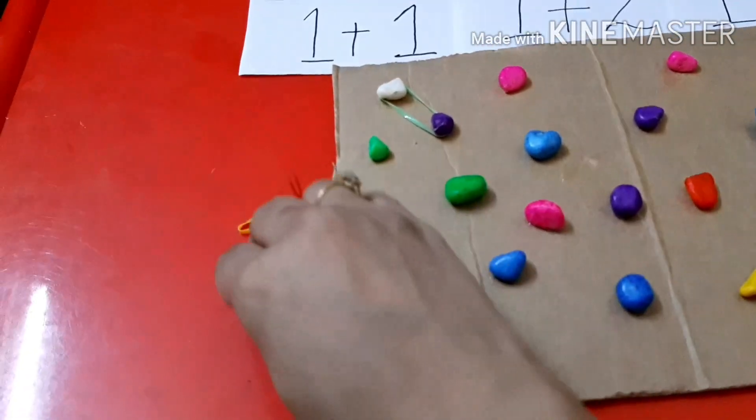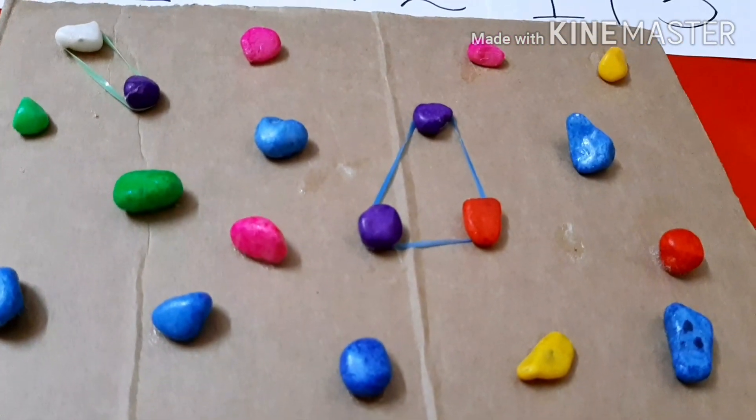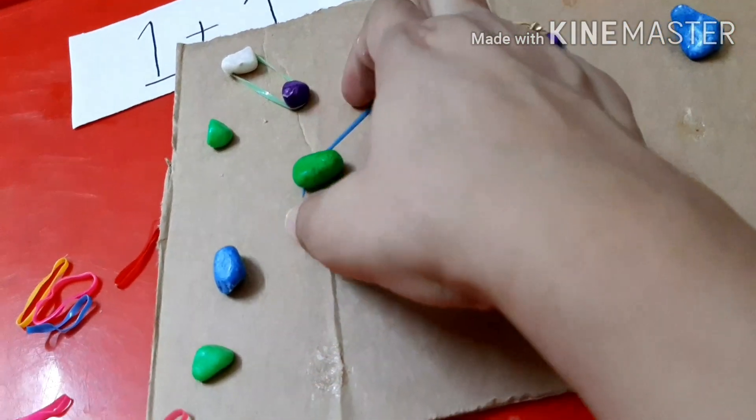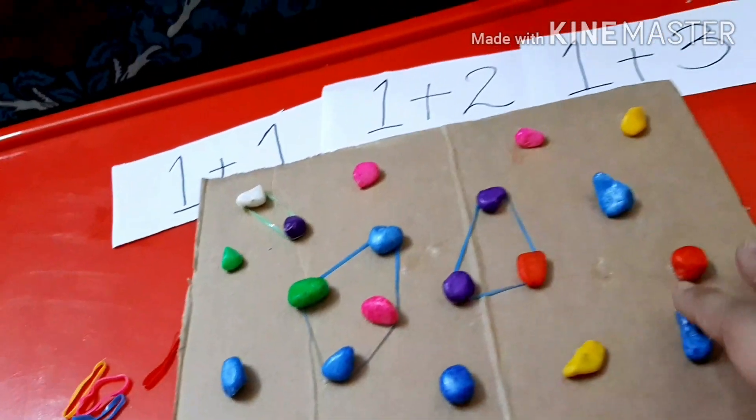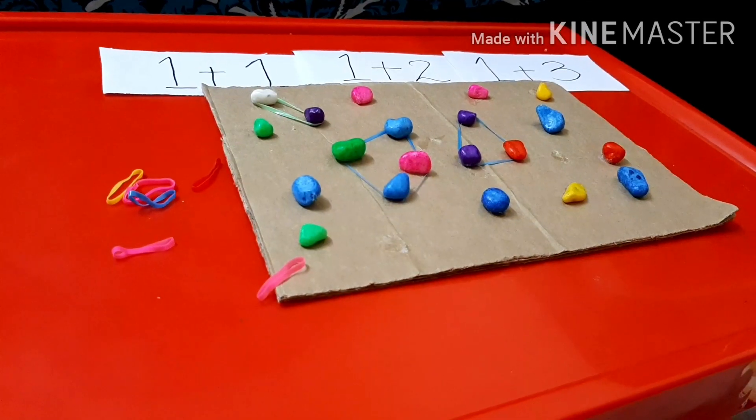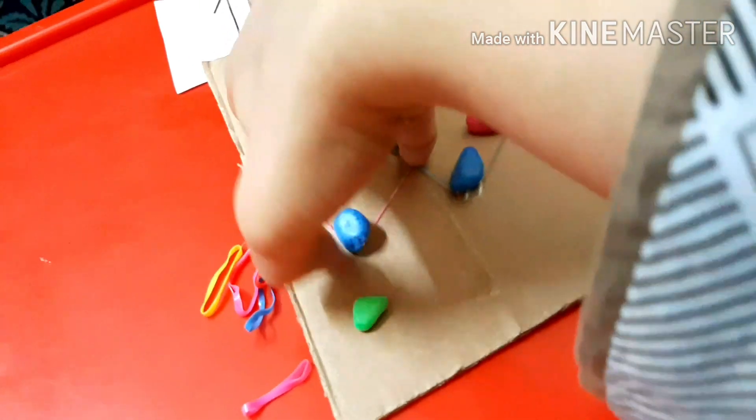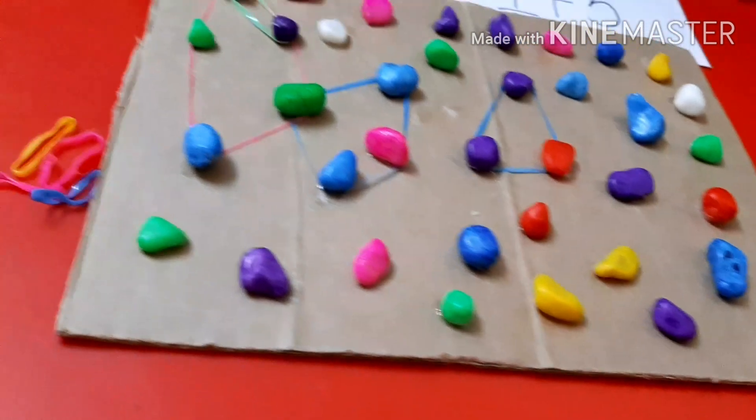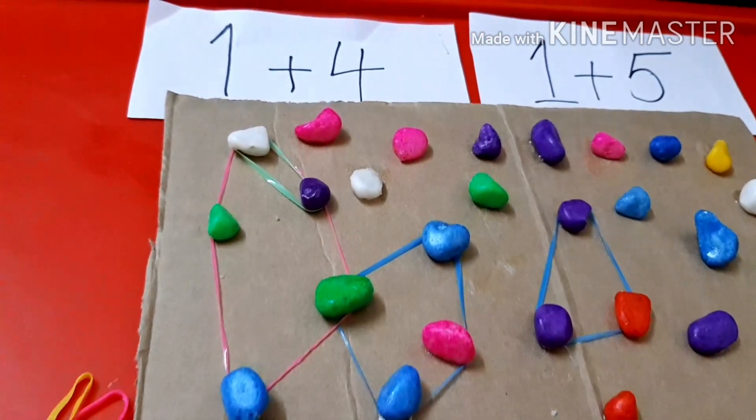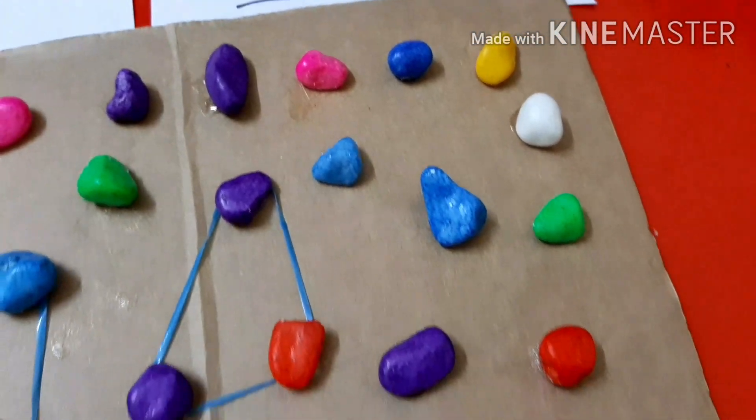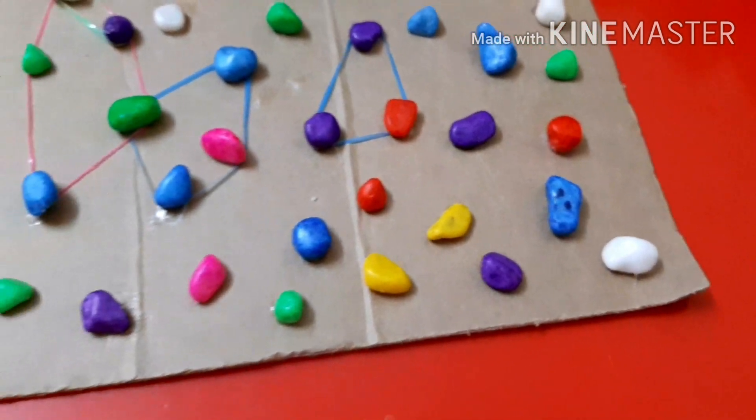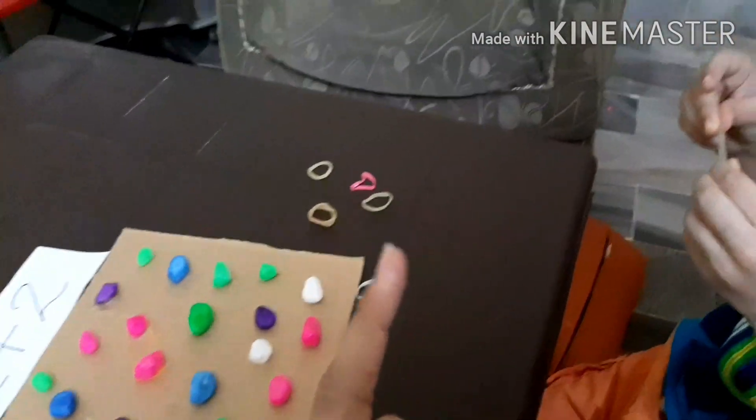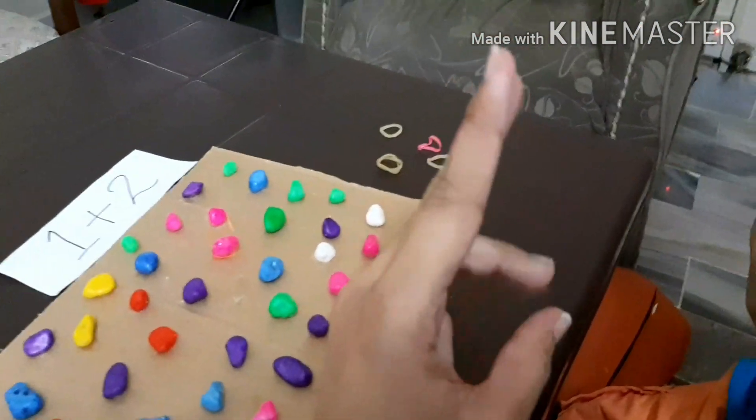This helps with their calculation and this also helps with their motor skills, which is holding a rubber band and putting it around something is not an easy task. This can also be done in general for a motor skill activity as well. You can use whatever you have at home, you can use buttons or thumb tacks. This was an easier way and you can keep them distracted for a while.